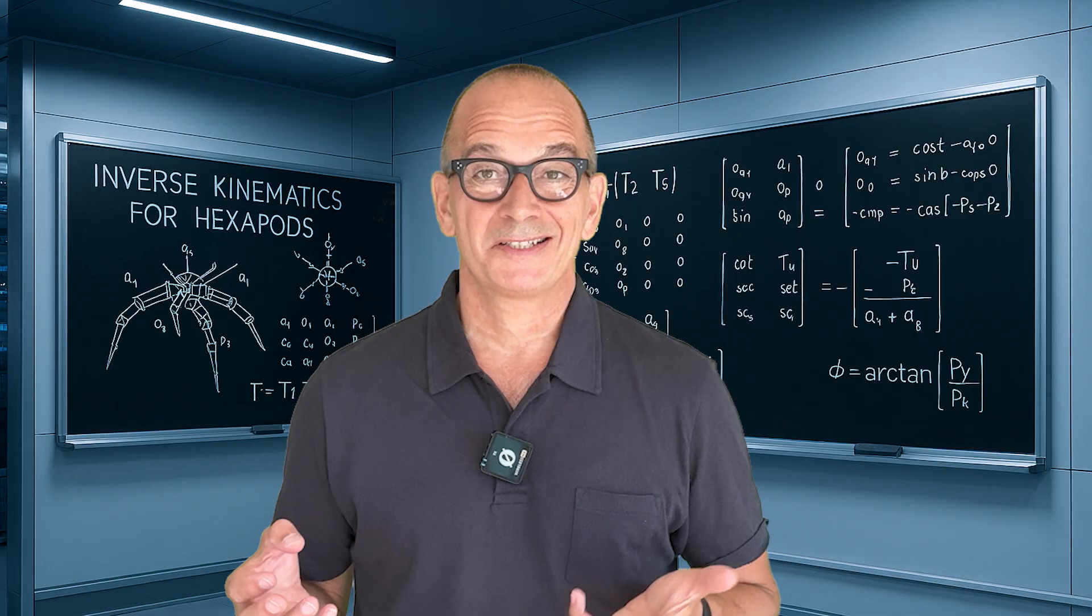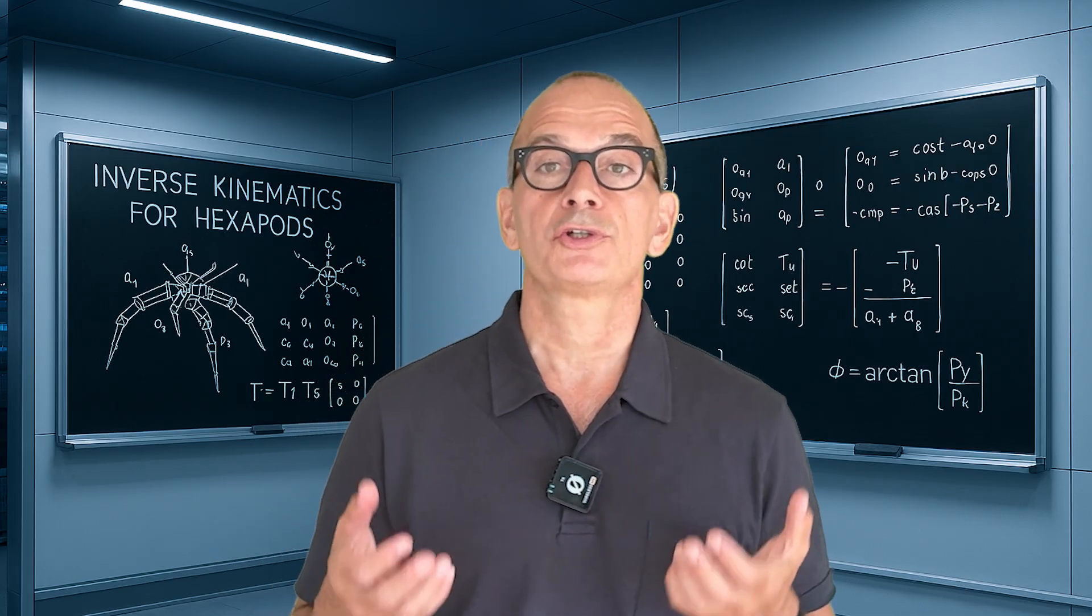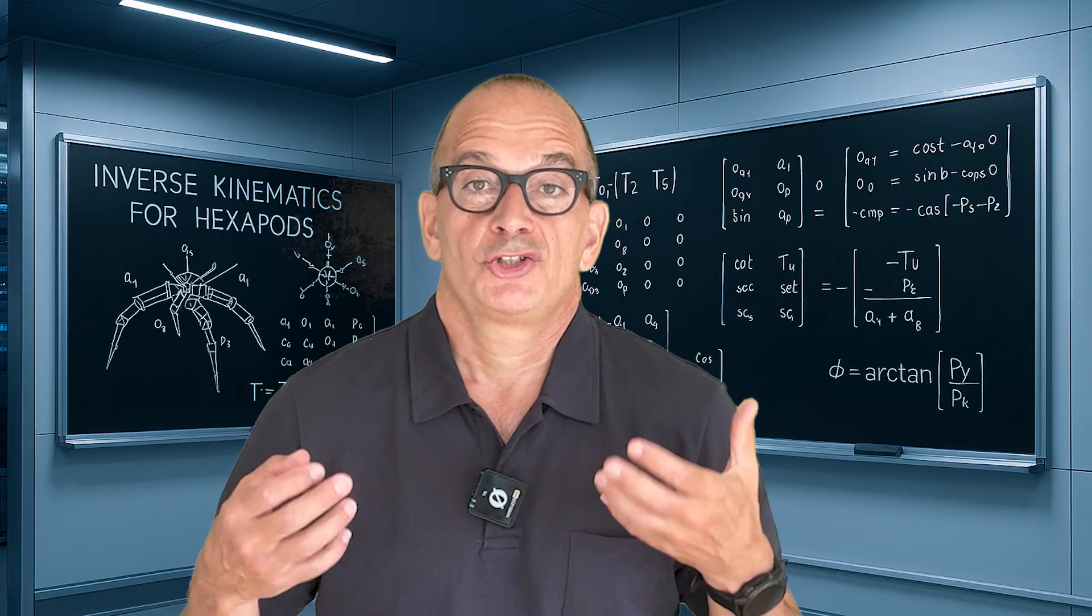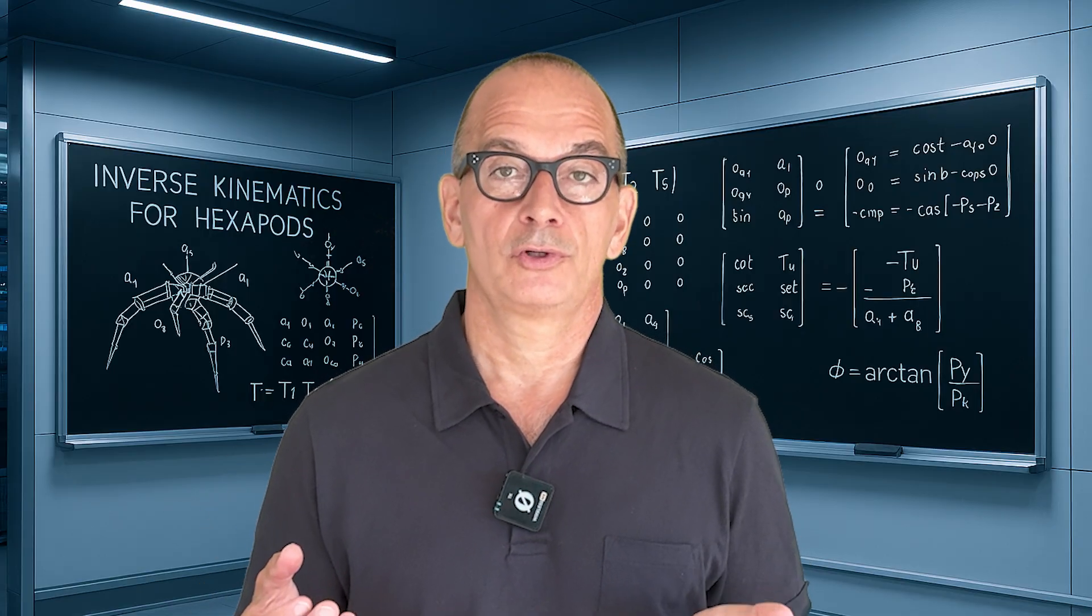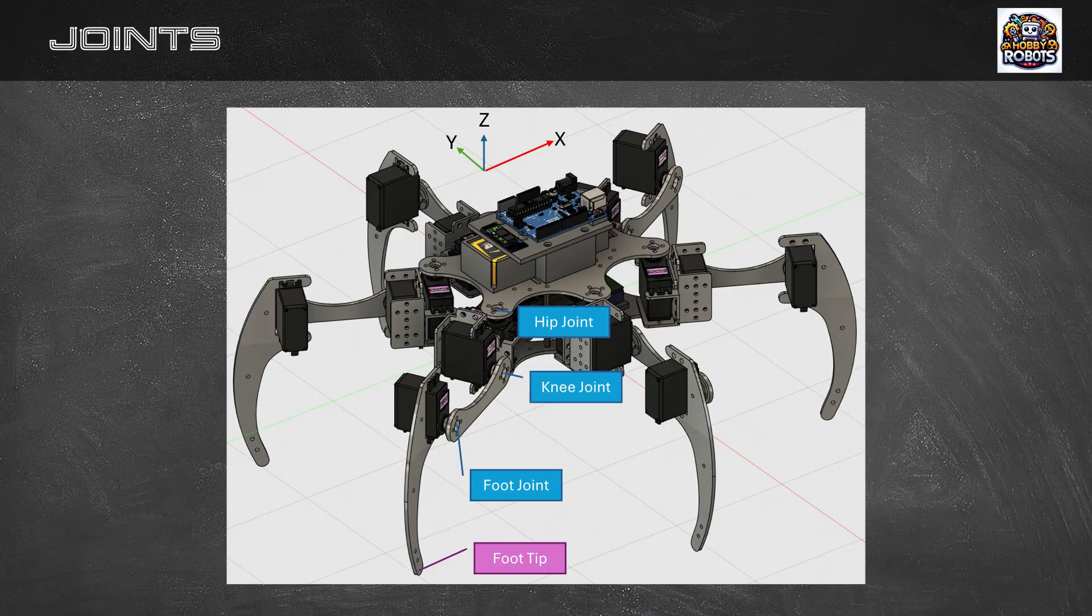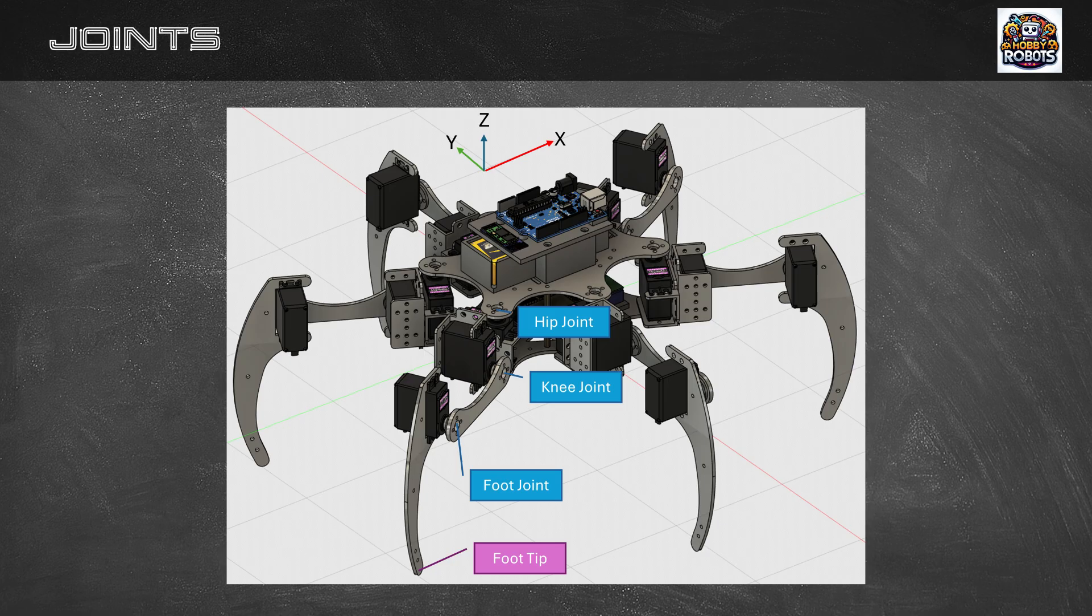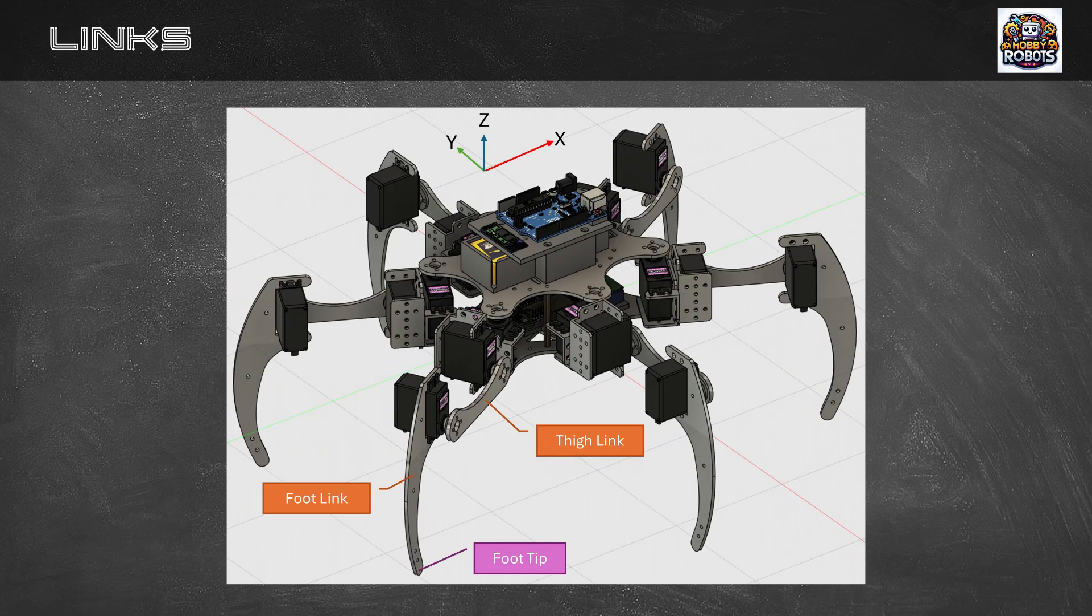Robot kinematics is all about how to get robots to move using joints and links. Joints are the parts of the robot that can rotate using servos. For a hexapod we have a hip and knee and a foot joint in each of the legs. Links are the rigid parts between the joints. In this hexapod there's a thigh link and a foot link.